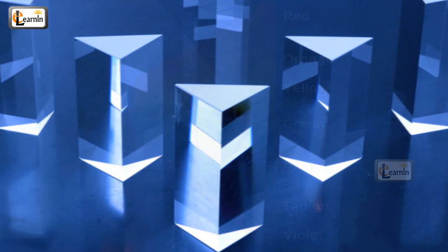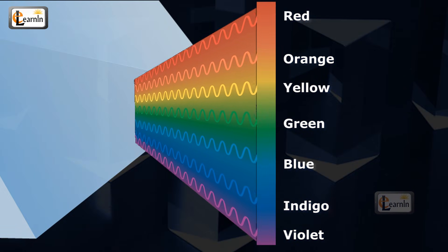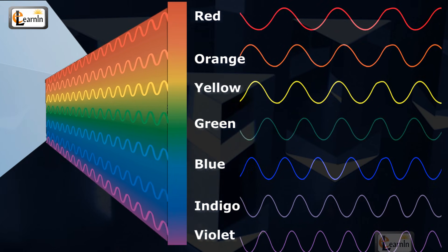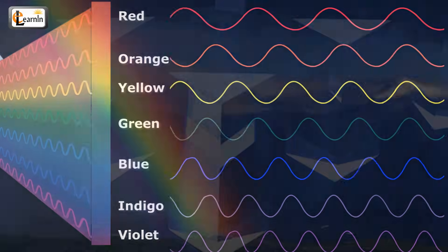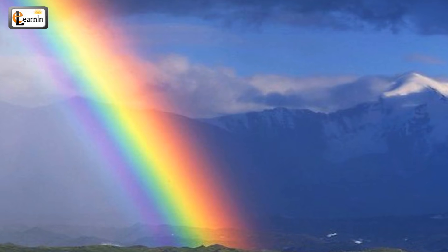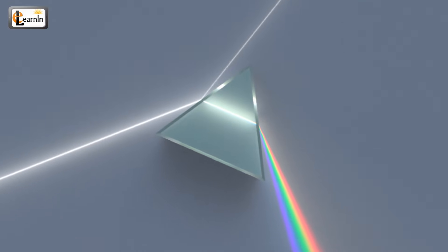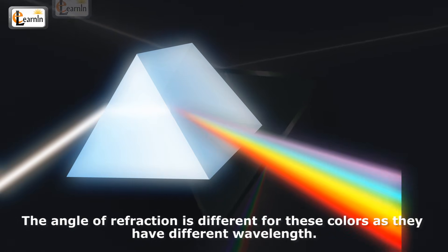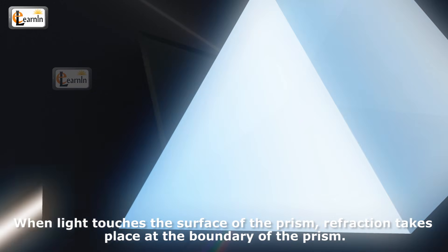Prisms are made up of glass. The seven different colors coming out of the prism constitute seven different wavelengths — each color represents a different wavelength of light. These different wavelengths travel at different speeds in the glass, and this is the main reason for the formation of a rainbow or spectrum. Another point to note is that the angle of refraction is different for each color, as they have different wavelengths.